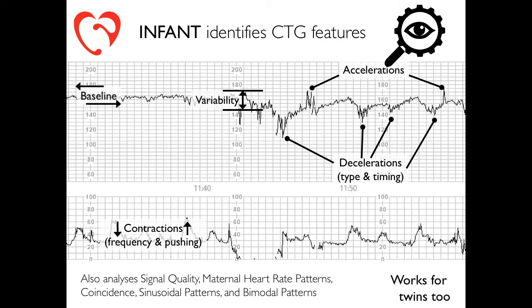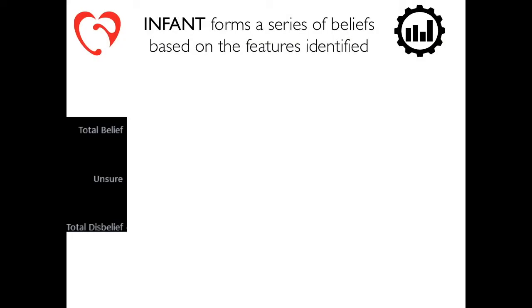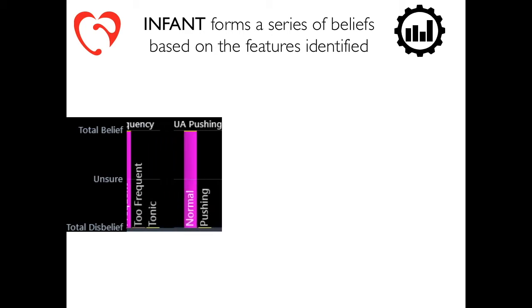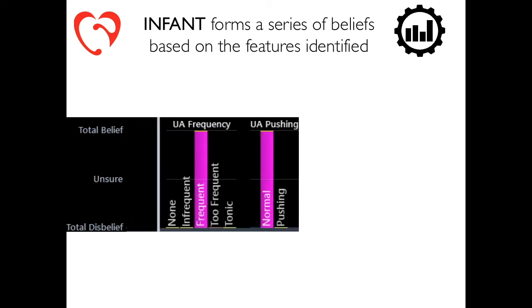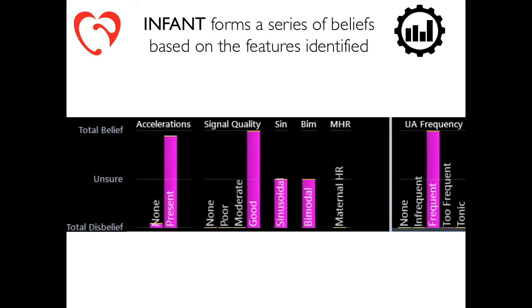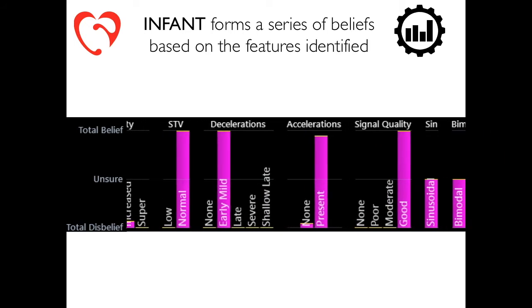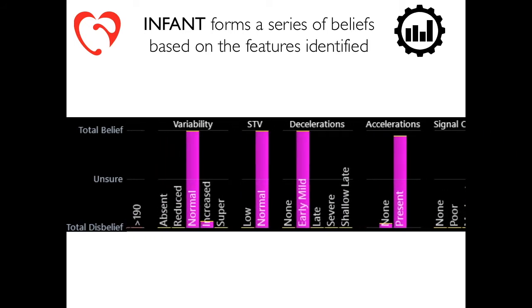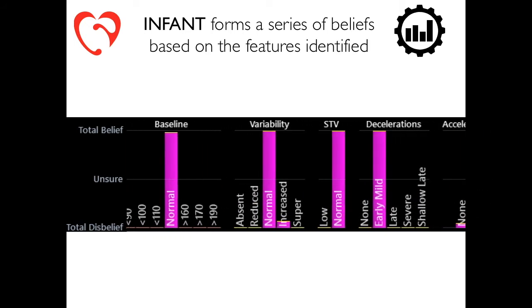INFANT can analyse two heart rate channels at the same time, so it also works for twins. INFANT identifies every feature on the CTG and then builds a picture of what the trace shows via an ever-changing histogram, one per feature. Every feature detected adds some weight of belief that a certain classification has been reached.